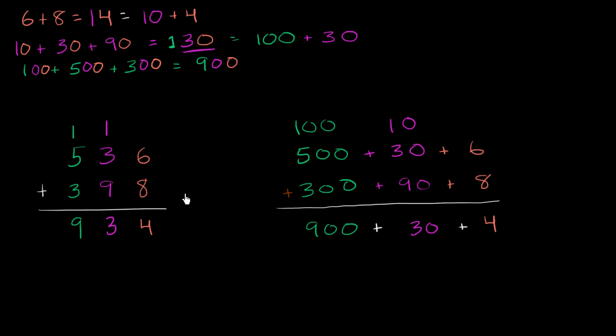So hopefully this gives you a little bit more sense of what we're doing when we carry the 1 every time. 6 plus 8 is 14. We carried the 1. That 1 represents 10, it represents this 10 right over here, just so we don't lose track of it. Then we say 10 plus 30 plus 90 is equal to 130, so that's 30 plus 100. Then we add the hundreds together, we get 900.